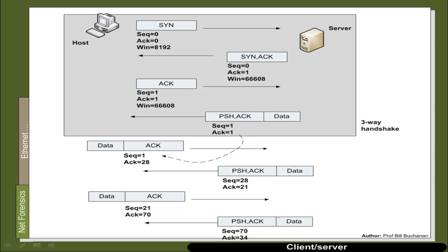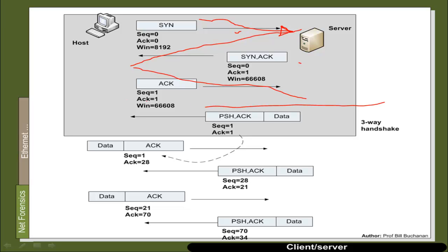The core of most communications on the Internet is built around the client-server three-way handshake. Initially a host connects to a server — the first TCP segment sent has a SYN flag set. Then the server, if willing to accept the connection, sends back a SYN-ACK. If this is acceptable, the host sends back an ACK and the connection is established. The key parameters involved are the TCP ports on either end, and a key element of TCP is that it is connection-oriented and reliable.